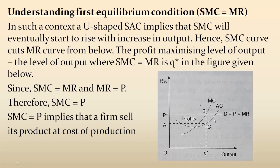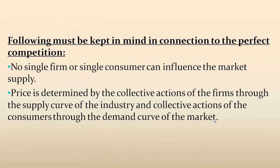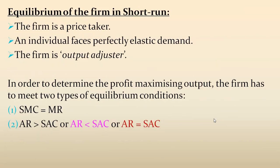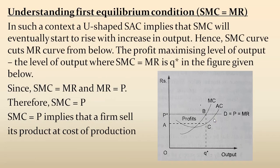Since SMC equals P, it implies that a firm must sell its product at the cost of production. In a perfect competition market, there exists only one particular price, and that price is the cost price — meaning the cost price is the selling price of the product. This perfect competition market is a very interesting topic, but remember that it is only a hypothetical situation.